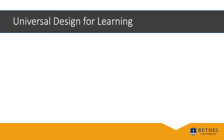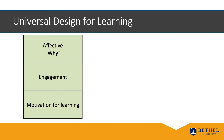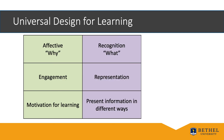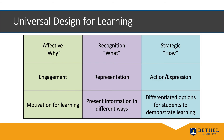As you look at Universal Design for Learning, we have Affective — the why — we have Recognition — the what — and we have Strategic — the how. Under the why, we have Engagement and Motivation for Learning. For Recognition, the what, we have Representation and Present Information in Different Ways. For Strategic, or How, we have Action and Expression: Differentiated Options for Students to Demonstrate Learning. So this follows the why, what, and how philosophy.